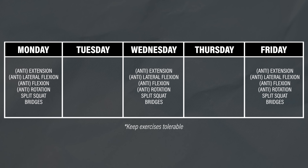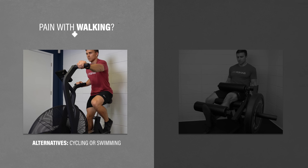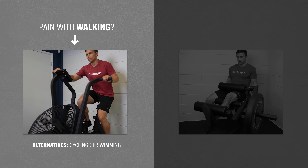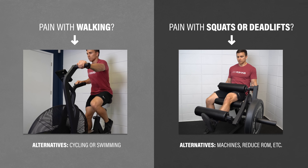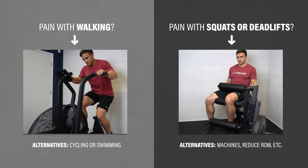Regardless of what you choose to do, aim to train at least two to three times per week, ensuring each movement is tolerable. It's important to maintain your physical activity levels to the best of your ability. If walking has become difficult, cycling or swimming can be great alternatives to minimize deconditioning. If squats or deadlifts are uncomfortable, you can swap exercises, use more machines, or reduce range of motion. If your goal is to return to a specific sport, you need a gradual and progressive plan. In some cases, taking a break from the sport initially may be required to allow for healing.